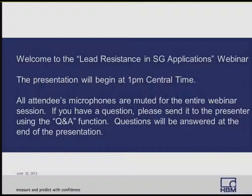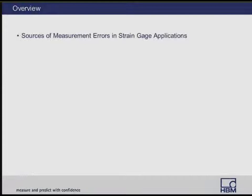Every strain gauge measurement, irrespective of its type, is bound to have some sort of measurement error. To the extent to which the error can be limited depends on a variety of different solutions to correcting problems, be they in the data acquisition side to the application of the strain gauge. This webinar is going to focus on one source of potential error: lead resistance issues in the application of gauges.